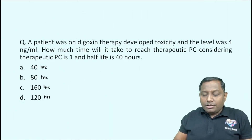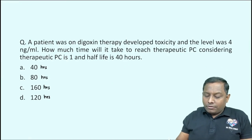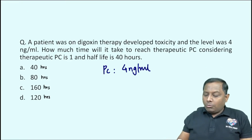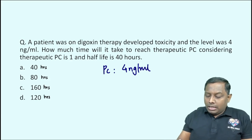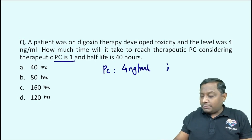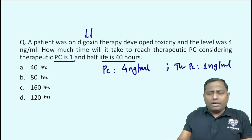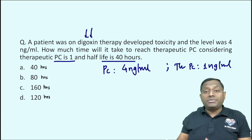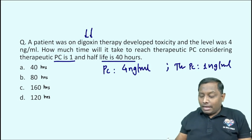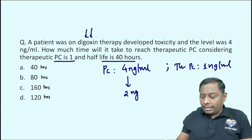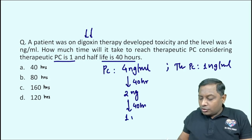A patient was on digoxin therapy and developed toxicity; the plasma level was found to be 4 nanograms per mL. How much time will it take to reach the therapeutic plasma concentration of 1 nanogram per mL if the half-life is 40 hours? Digoxin has a half-life of 40 hours, so after 40 hours it will become 2 nanograms per mL.